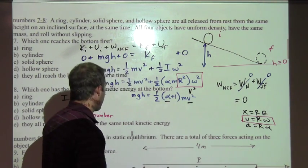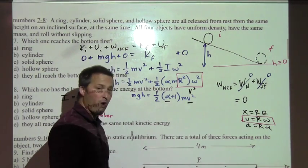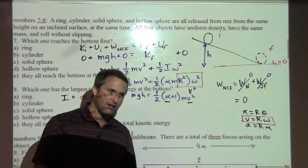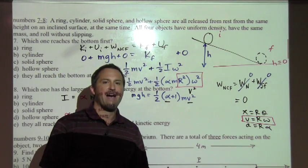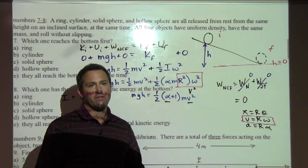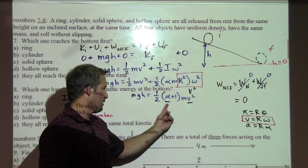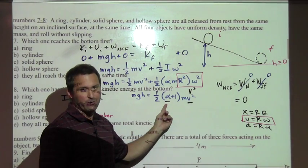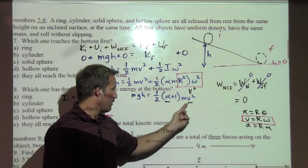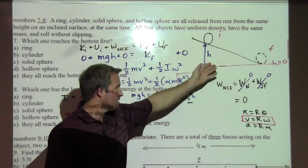At this point, we'll get out those numbers. Alpha for the ring was one. For the cylinder, it's one-half. For the hollow sphere, it's two-thirds, and for the solid sphere, it's two-fifths. Two-fifths is the smallest of those four values of alpha. And so for the solid sphere, it will have the largest speed at the bottom. We're almost there here.